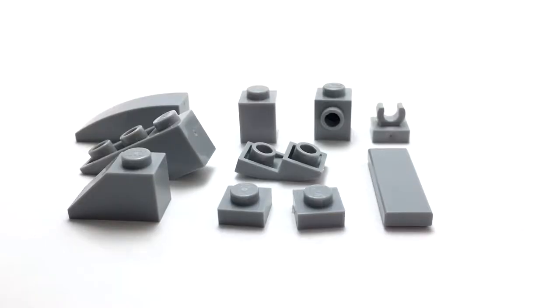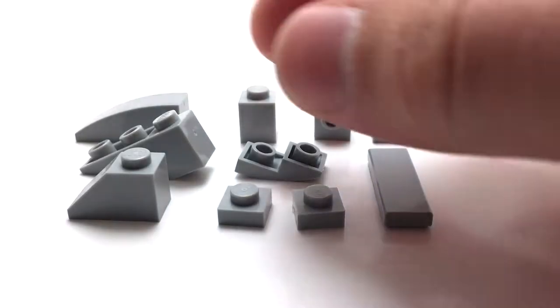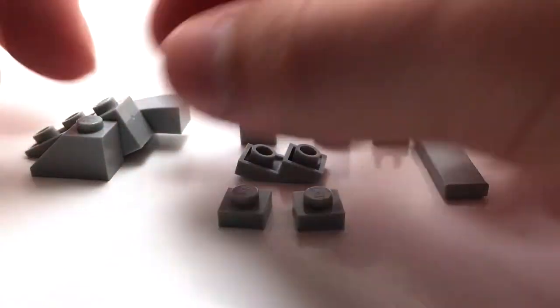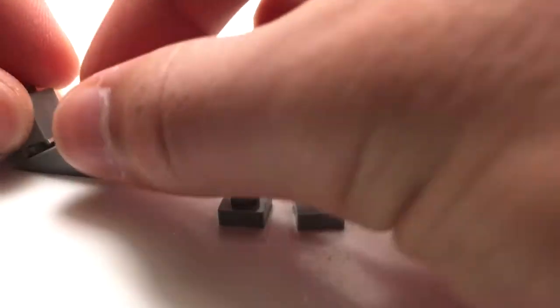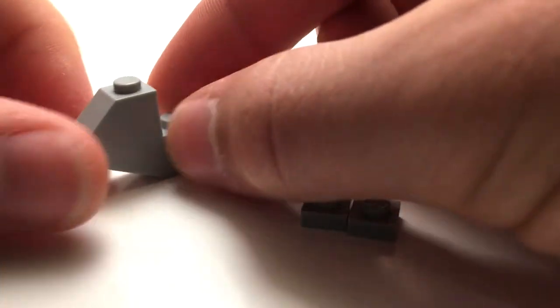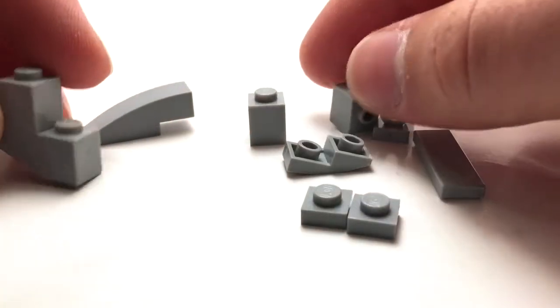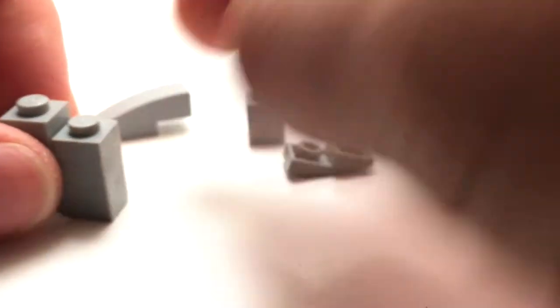Alright, here is our grouper. Building this up on the front of this fish makes use of some nice sloped pieces. Here we have a couple one by one plates that stack up here.